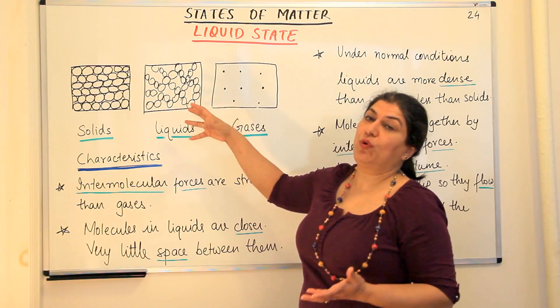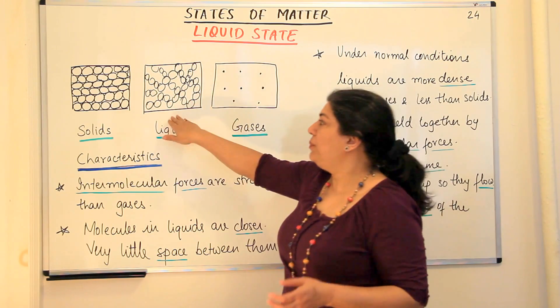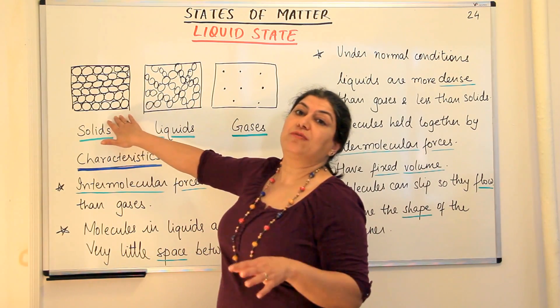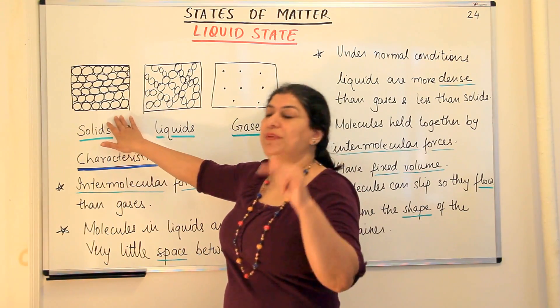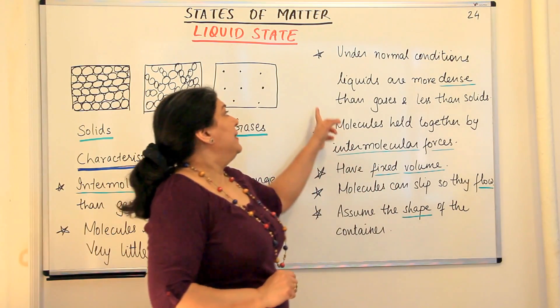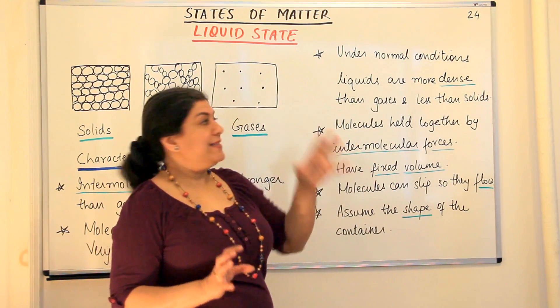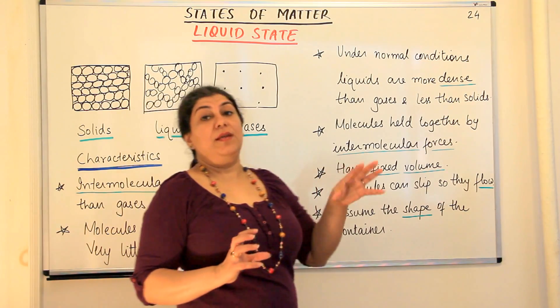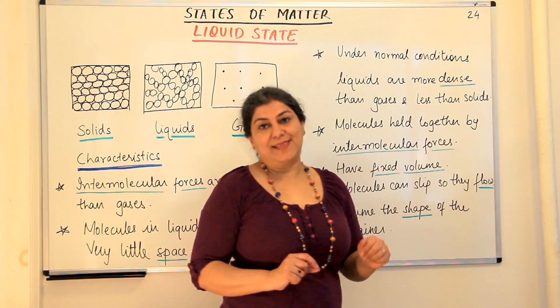So the mass per unit volume of gases would be very less, but in the case of liquids the mass per unit volume for the same compound would be more, and if that compound is present as a solid the density would be still more.